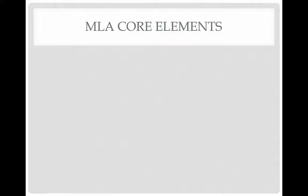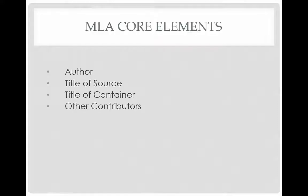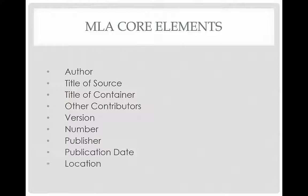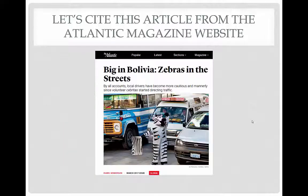MLA has nine core elements: author, title of source, title of container, other contributors, version, number, publisher, publication date, and finally, location. We are going to use these elements to cite this article from the Atlantic Magazine website.